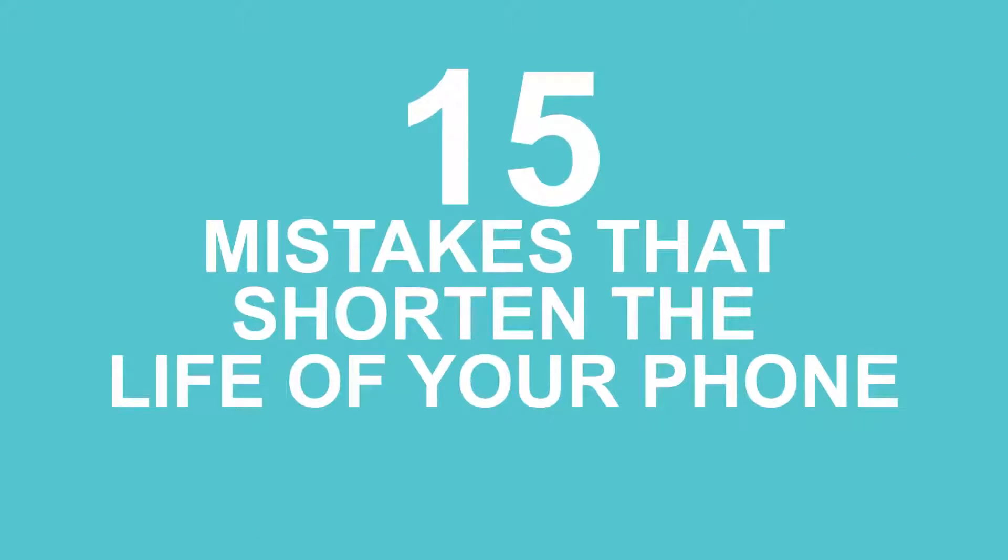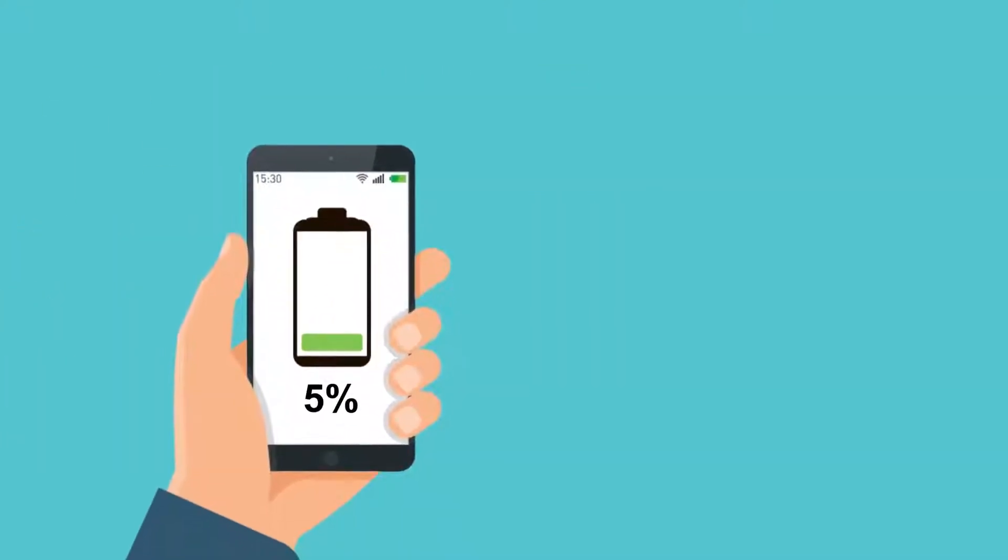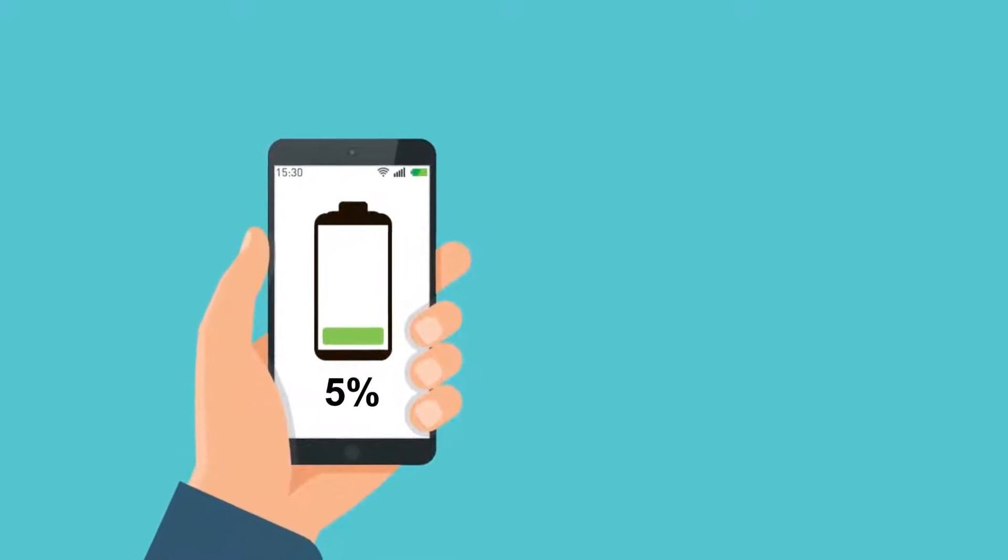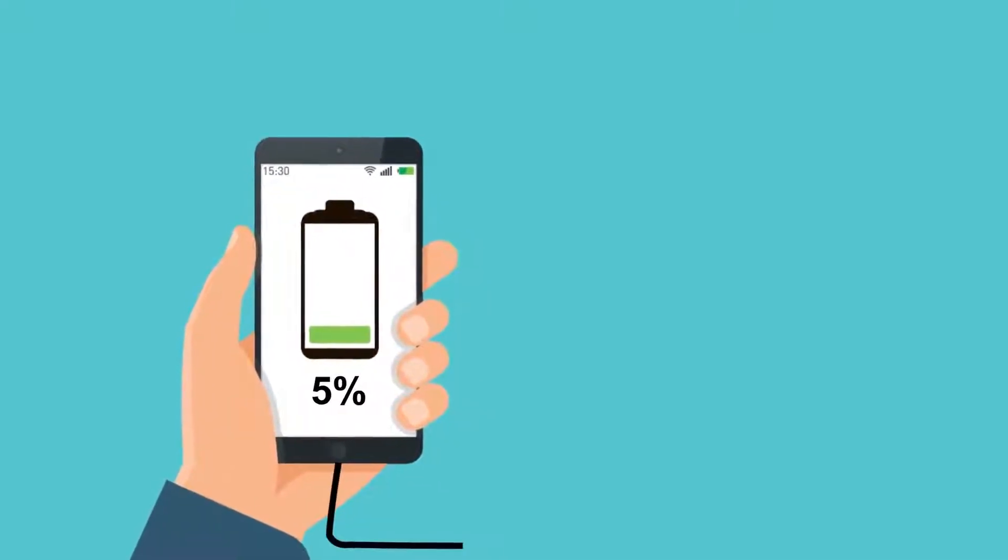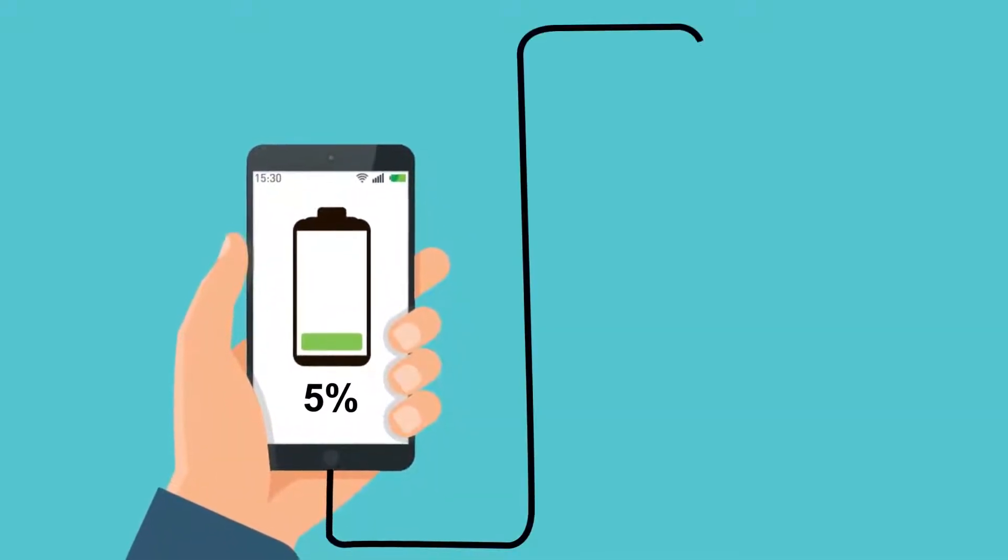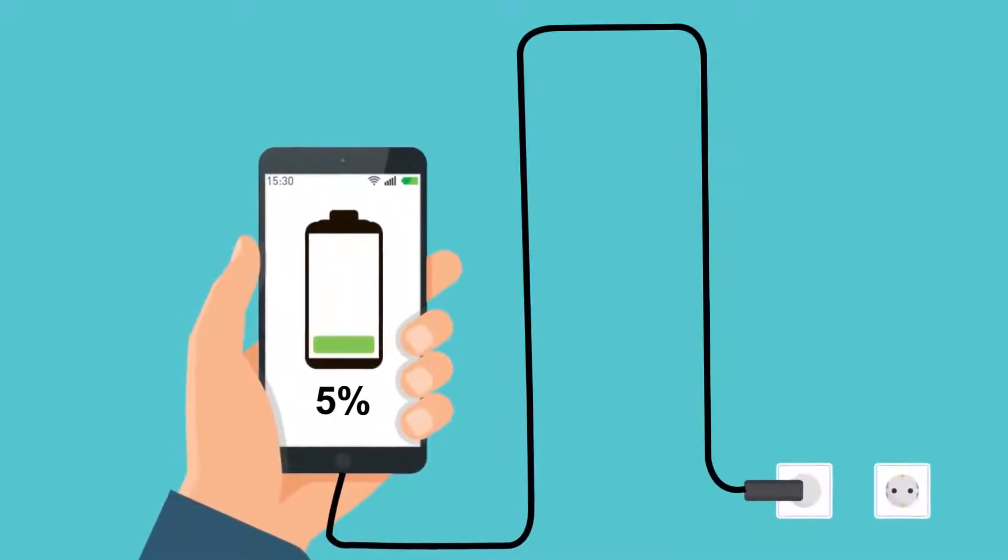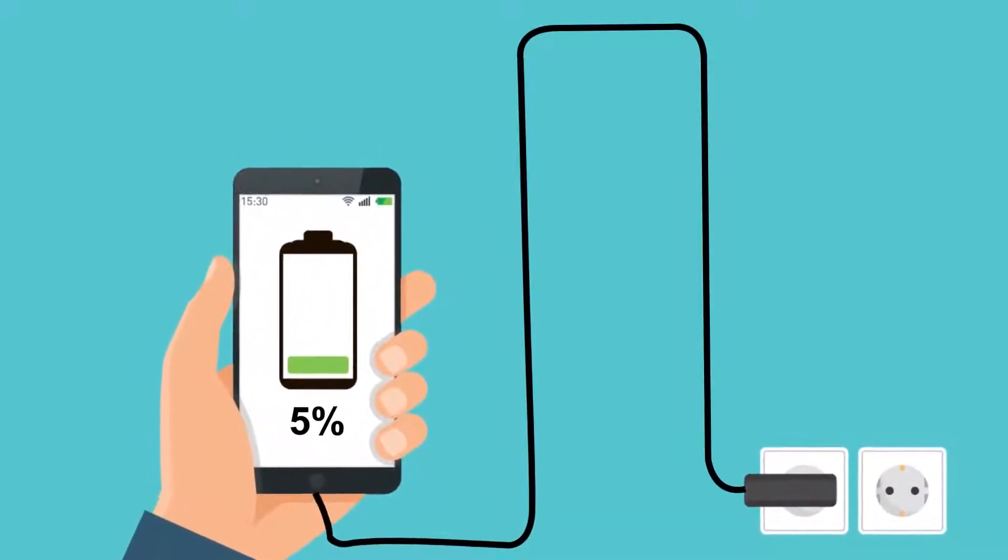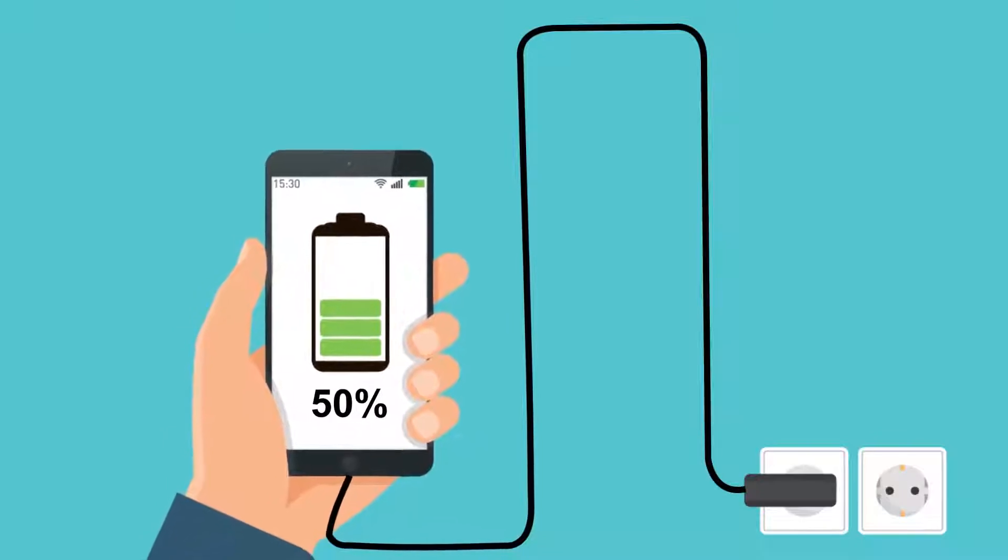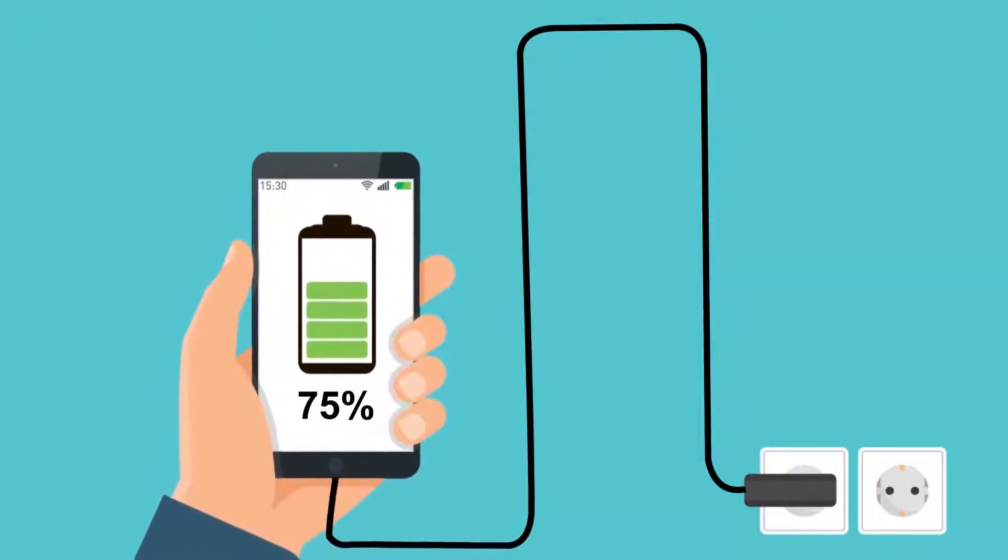15 Mistakes That Shorten The Life Of Your Phone. Nowadays, one can hardly imagine life without a cell phone. And it happens quite often that our gadgets start to act up just half a year after we bought them. It is frustrating, but in most cases, we ourselves are to blame. Let's face it, we don't always handle our devices properly.